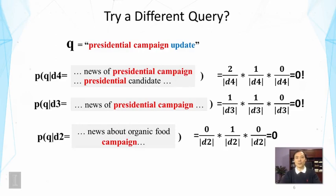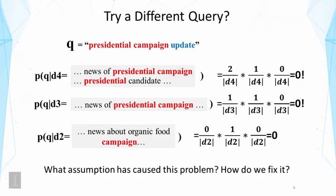Whenever we have such a result, we should think about what caused the problem and examine what assumptions were made in deriving this ranking function. If you examine those assumptions carefully, you'll realize that the problem is caused by the assumption that every query word must be drawn from the document in the user's mind. To fix this, we have to assume that the user could draw a word not necessarily from the document itself.